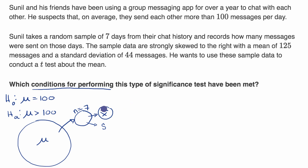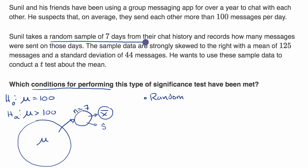The first is that this is truly a random sample — that's known as the random condition. You have seen this before when we did significance tests with proportions; here we're doing it with means and population mean versus sample mean, as opposed to population proportion and sample proportion. The random condition is met: Sunil takes a random sample of seven days from their chat history. They don't say how he did it, but we'll take their word for it that it was a random sample.